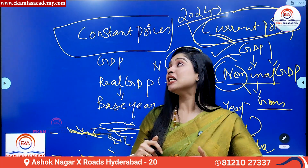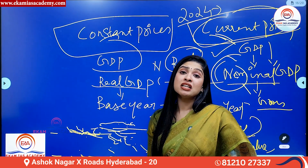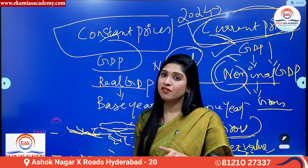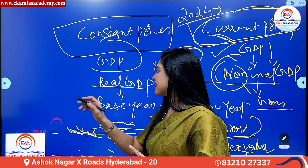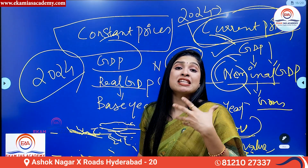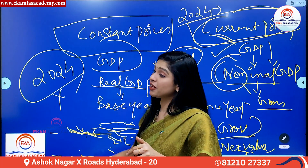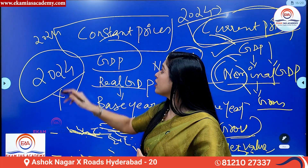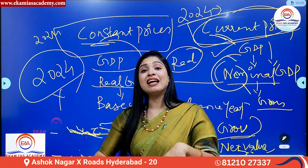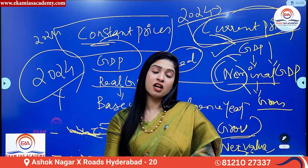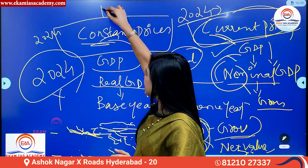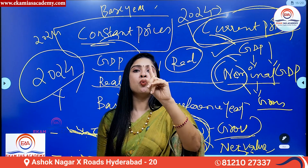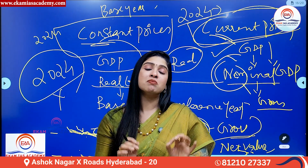The next one is GDP at constant prices, or real GDP. Real GDP is GDP at constant prices. Constant prices means when the value of goods and services produced in a country in one particular year — for example, 2024 — is calculated by multiplying the price of some other year, not 2024 prices, but rather the price of some other year, then that is called GDP at constant prices. Some other year doesn't mean any year you can choose — there is something called a base year or constant year. In India, the base year means reference year; you choose one particular year and call it the base year.